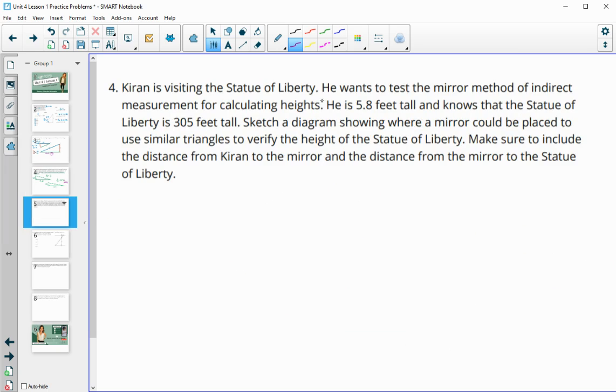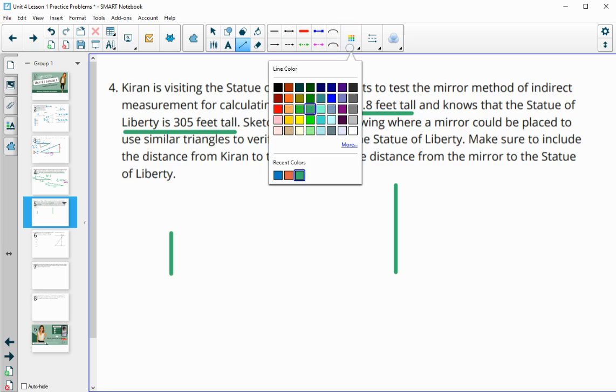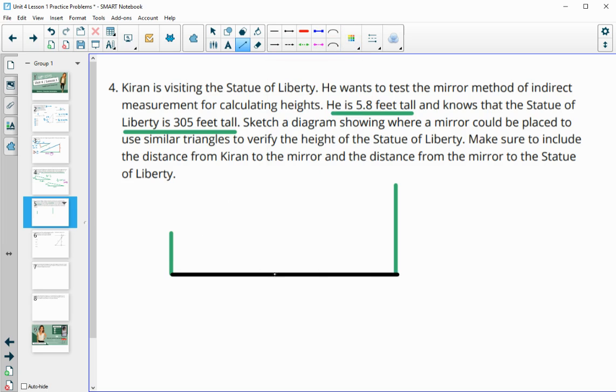Number four, Kieran is visiting the Statue of Liberty. He wants to test the mirror method of indirect measurements for calculating heights. He is 5.8 feet tall, and he knows that the Statue of Liberty is 305 feet tall. Sketch a diagram showing where a mirror could be placed to use similar triangles. So if we kind of draw Kieran here, and then we draw the Statue of Liberty here, okay, then the ground will connect them. And we're going to try and figure out where the mirror would need to be placed in order for this to work. So let's fill in these heights. So we know that Kieran was 5.8 feet tall, and the Statue of Liberty was 305 feet tall.